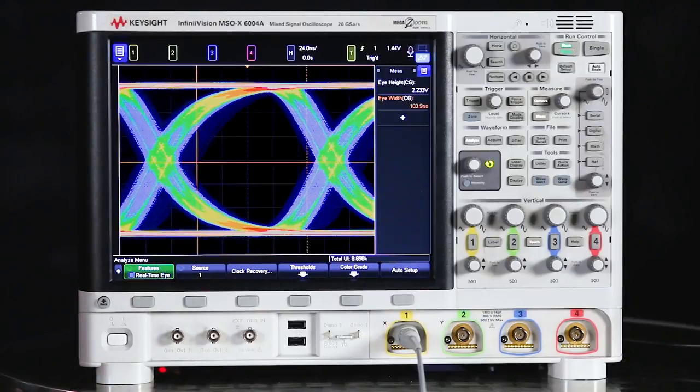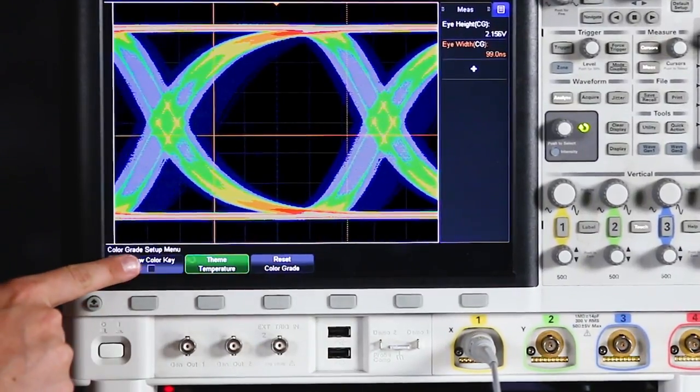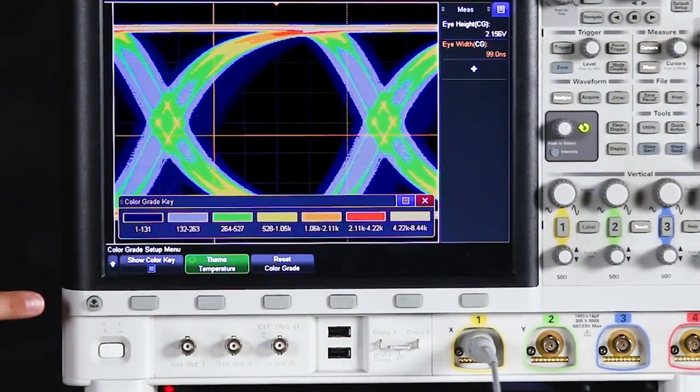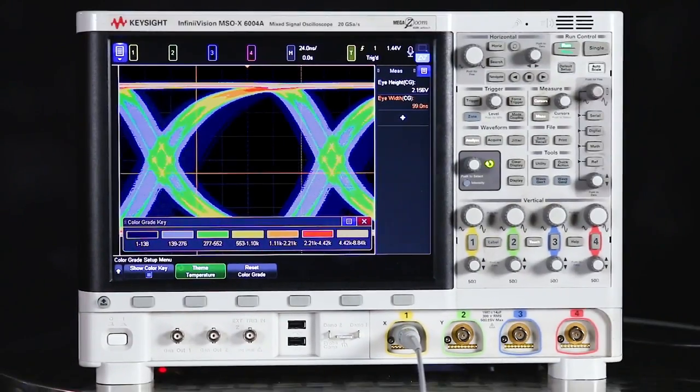And it uses color grading to display this information. So if we go into the color grade menu and select show color key, we're able to see just how frequent or infrequent the signal is coming through certain areas of the screen. So this will allow you to see if your signal's flipping bits correctly or if there are any delays or jitter.